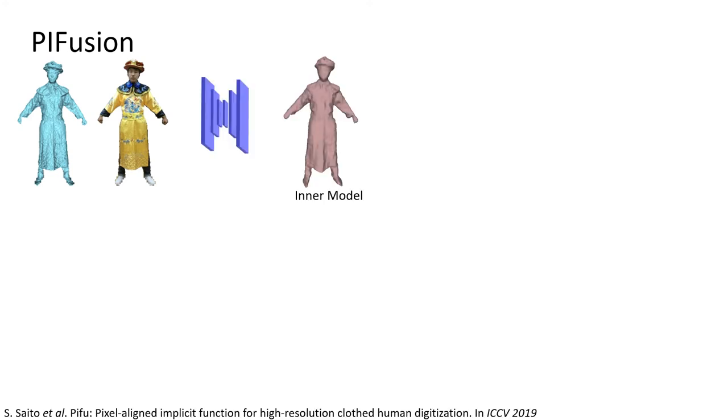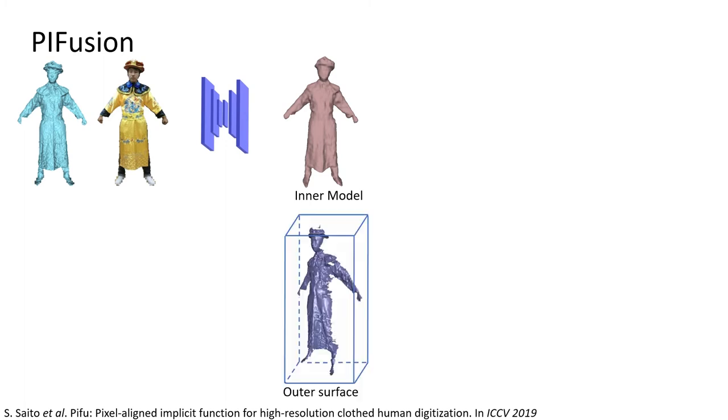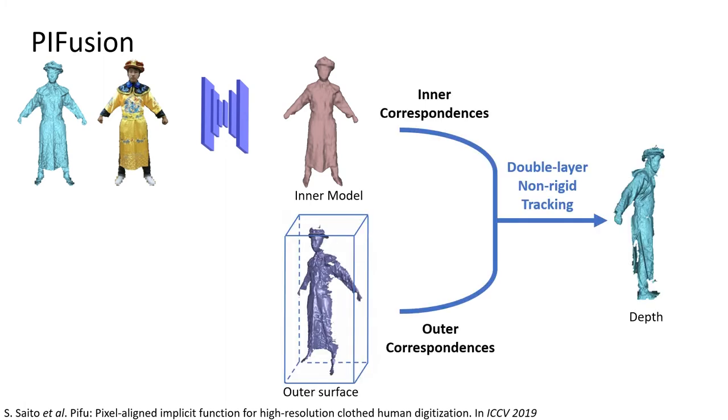Now, let's see the details of our method. We incorporate the depth feature in the PIFu to generate a more accurate inner model. Then, we construct inner and outer correspondences to achieve robust double-layer tracking, while the proposed non-rigid volumetric deformation is refining the inner model continuously.